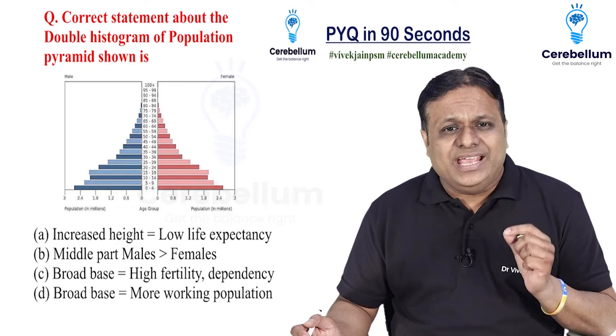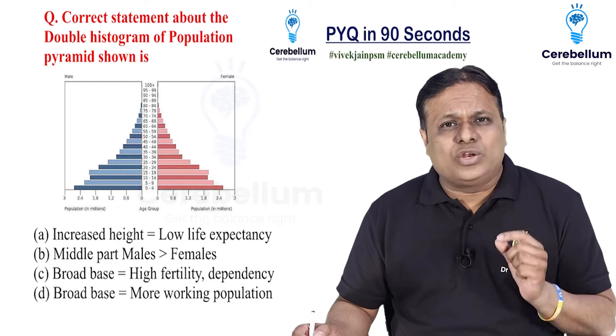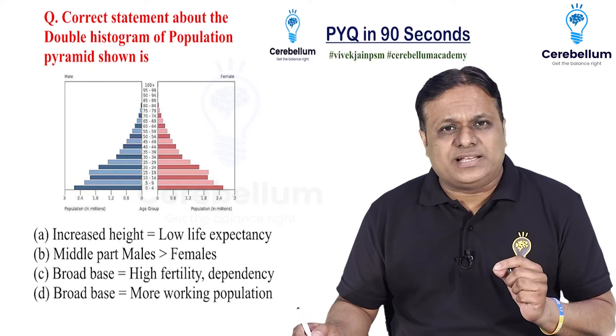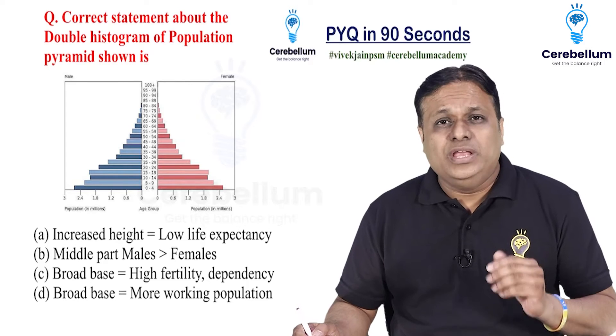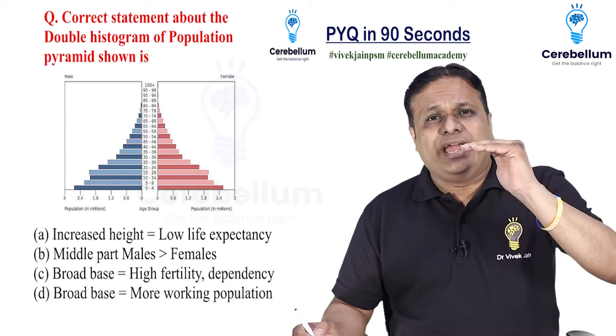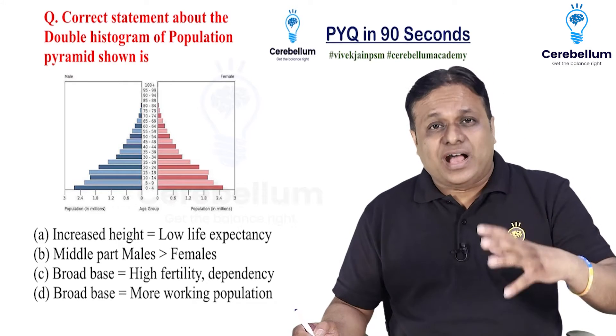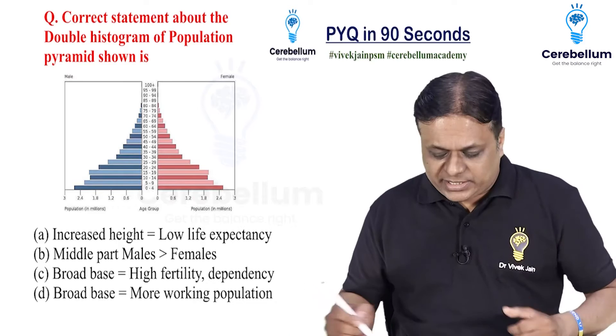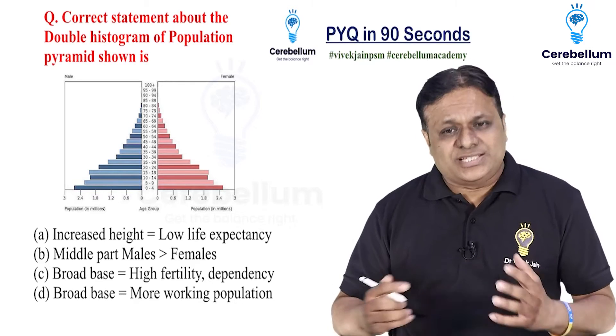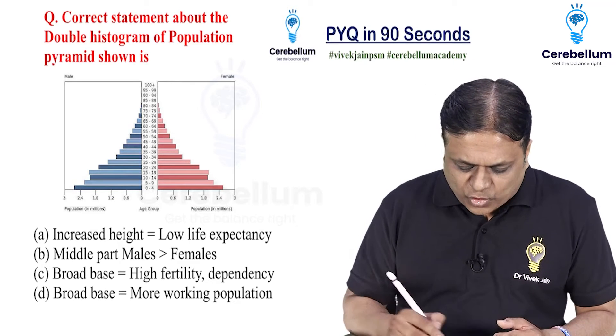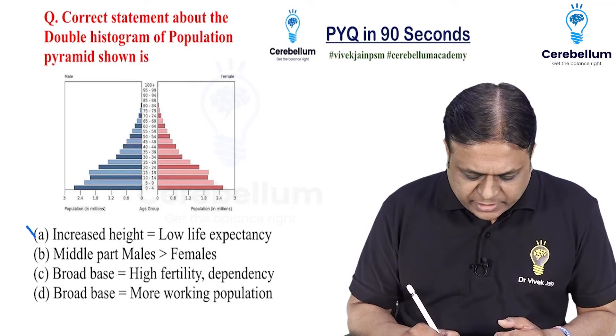Choice A says increased height is low life expectancy. No — increased height means higher life expectancy. So this is a false statement.